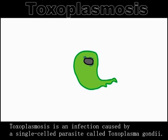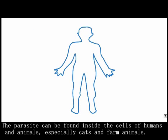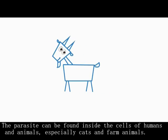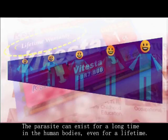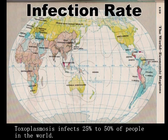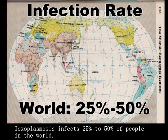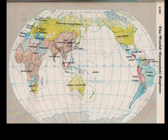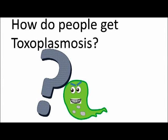Toxoplasmosis is an infection caused by a single-celled parasite called Toxoplasma gondii. The parasite can be found inside the cells of humans and animals, especially cats and farm animals. The parasite can exist for a long time in the human body, even for a lifetime. Toxoplasmosis infects 25% to 50% of people in the world. The infection rate in China is 5% to 20%.